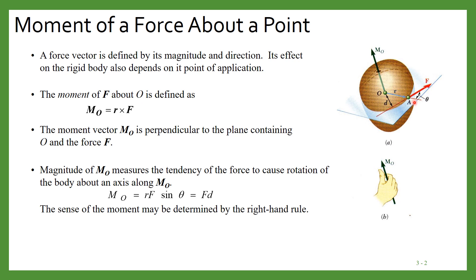The direction of this moment you can calculate by the right-hand thumb rule. When you move from this direction to here, the direction of the moment will be given by your thumb — as we have seen in the case of the vector product. If you are moving from this point to this point, then the thumb will give you the direction of the moment.